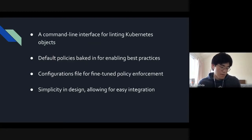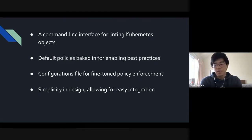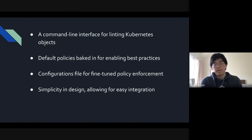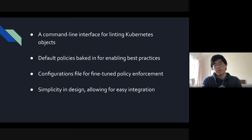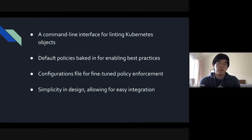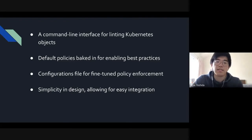What is KubeLinter? In short, it is a command line tool that you can run to lint against your Kubernetes manifests or Helm charts, to report on any security pitfalls or improvements you can make on your Kubernetes YAML files. It comes with default security check policies for enabling best security practices, and also allows you to configure a configuration file to customize your own KubeLinter — for example, to rule in or rule out particular checks, or even write your own checks using built-in check templates.